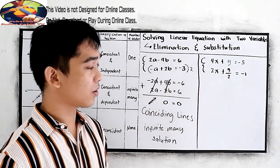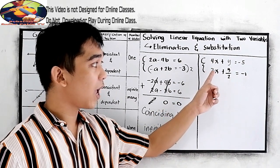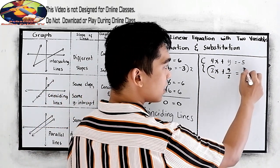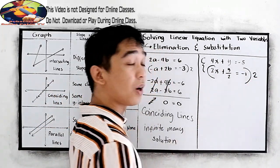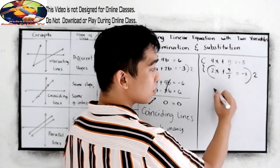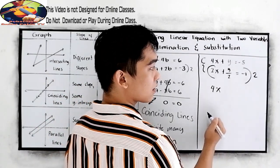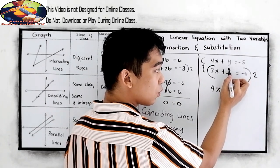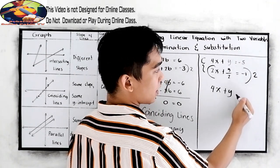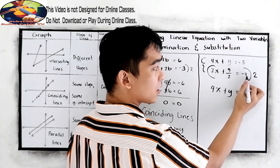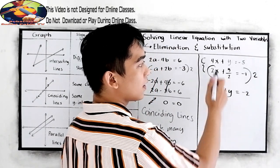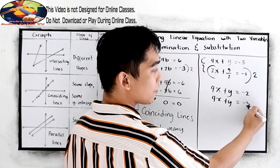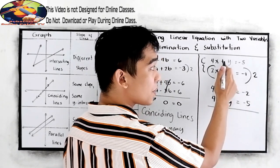Using the elimination method, our coefficient for x must be the same. So all we need to do is to multiply 2 in our equation number 2. So 2x times 2 give us 4x. 2 divided by 2 that is 1 times y, that is 1y or simply y is equal to negative 1 times 2, negative 2. Now 4x plus y is equal to negative 5. Just copy the equation 1.